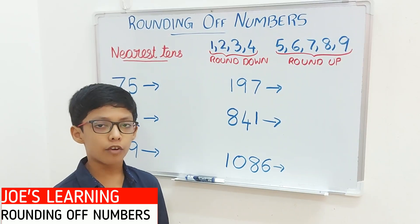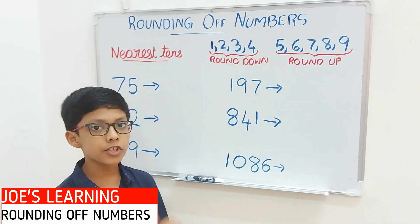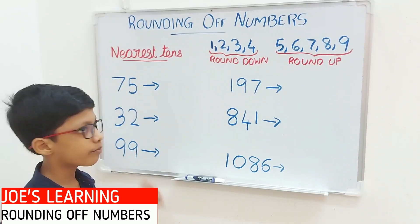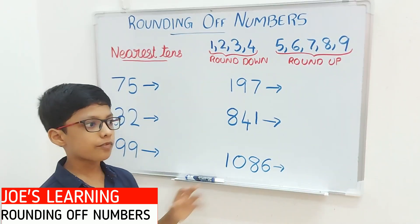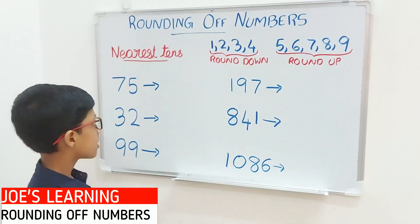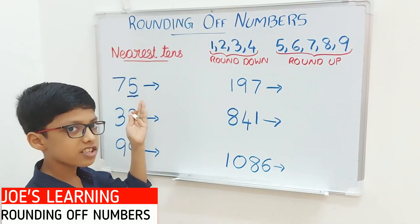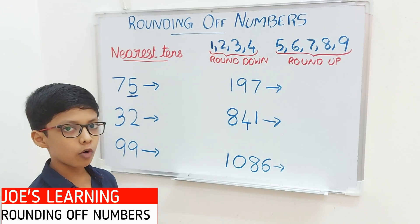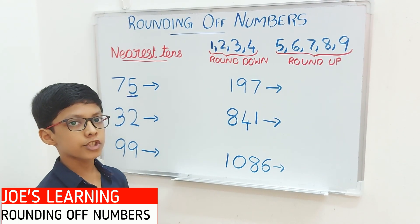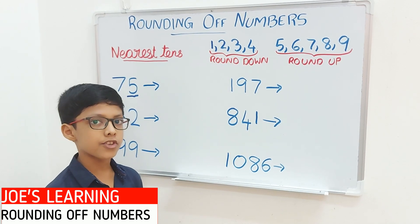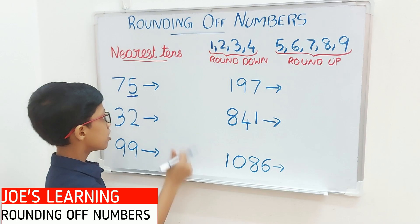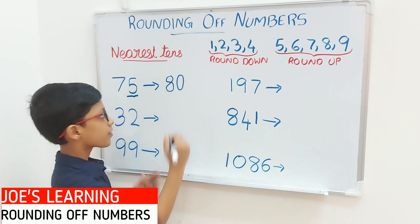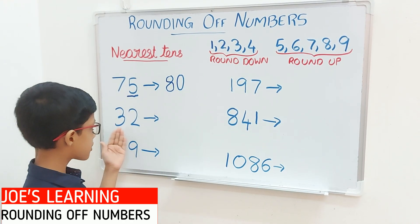So first let's try rounding off numbers to the nearest tens using two-digit number examples. My first two-digit number example is 75. As I said earlier, we need to first look at the digit in the 1's place. In this case, 5 is in the 1's place, so we need to round upwards — to the tens that is after the number. So 75 rounded off to the nearest tens equals 80.